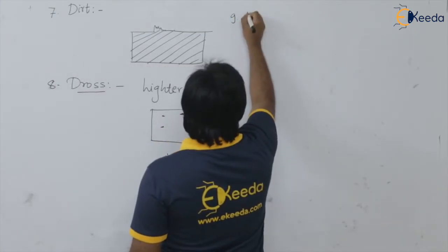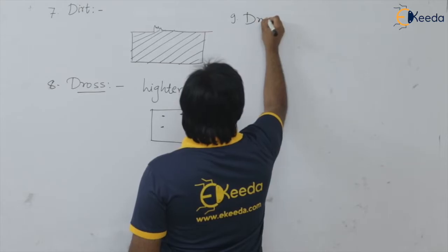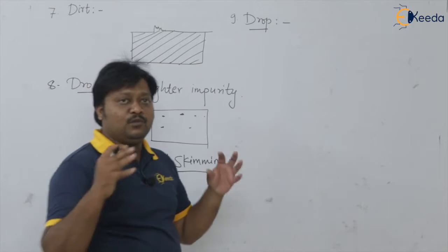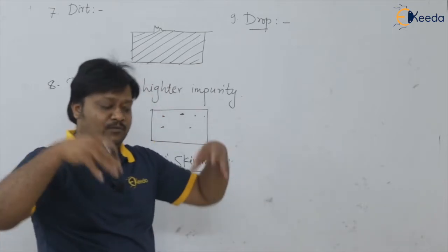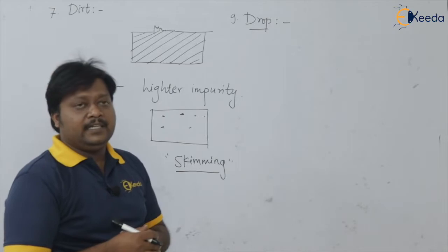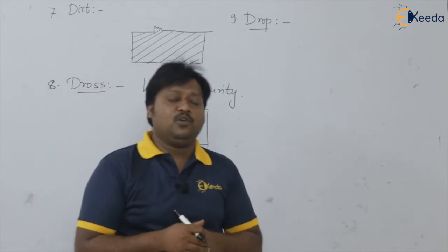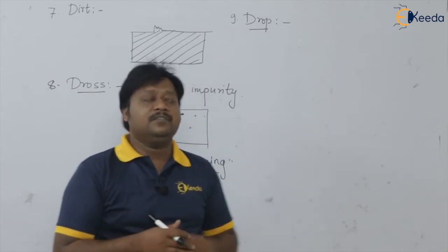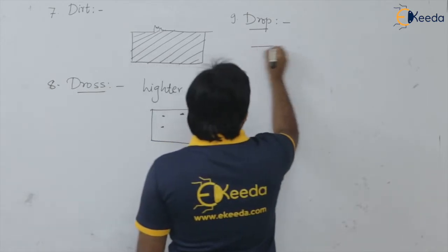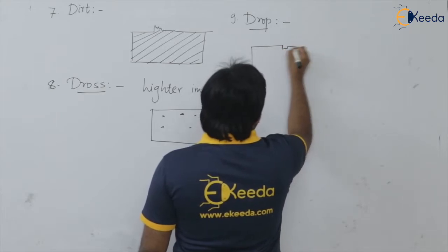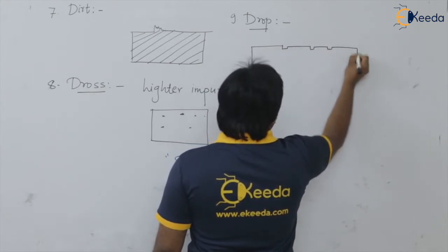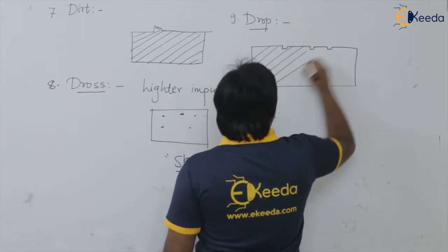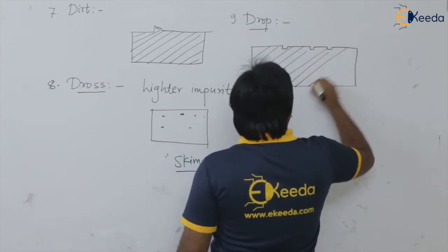Next we are having the drop. What happens? When the sand from the cope falls onto the casting surface, it gets embedded into the top surface of the casting. When we remove that sand which is embedded into the top casting surface, some angular depressions can be seen in the casting. These angular depressions are nothing but the drop.